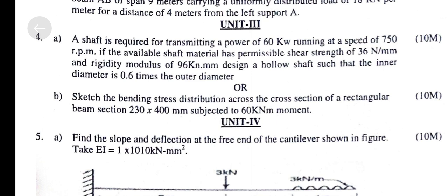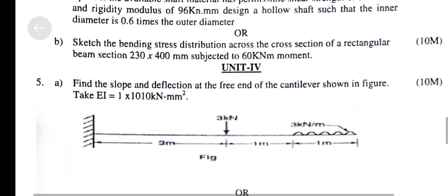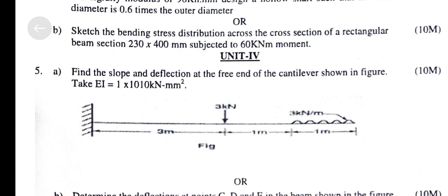design a hollow shaft such that inner diameter is 0.6 times the outer diameter. Question B. Sketch the bending stress distribution across the cross-section of a rectangular beam section 230 × 400mm subjected to 60kNm moment.